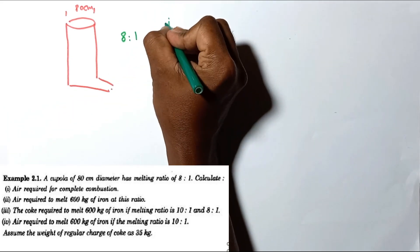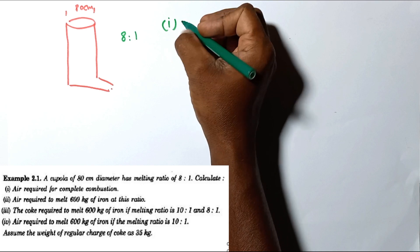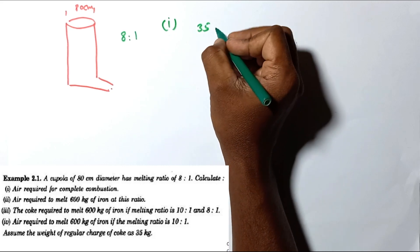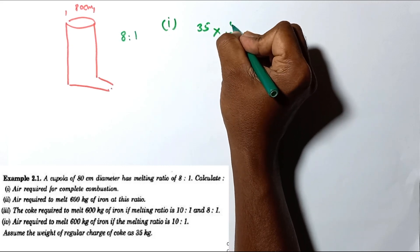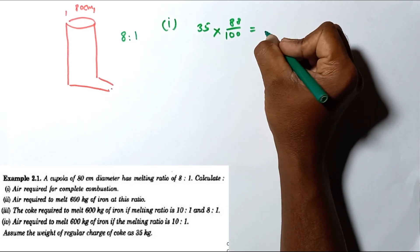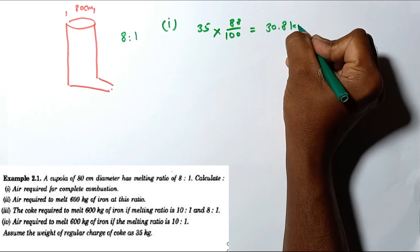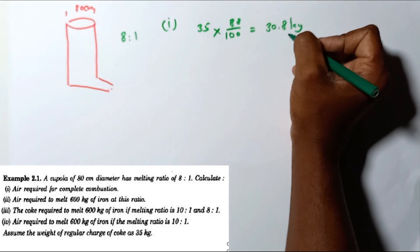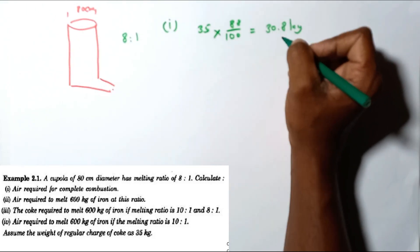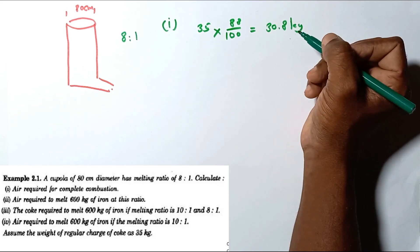Starting with the first question — the air required for complete combustion. With 88 percent purity and 35 kilograms of coal, the total amount of carbon contained in the coal is equal to 35 × 0.88 = 30.8 kilograms.